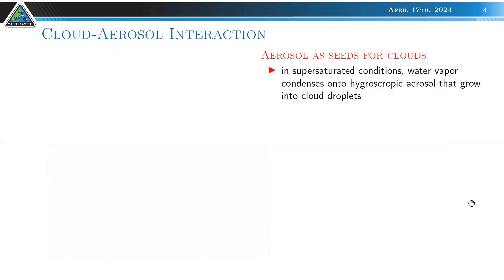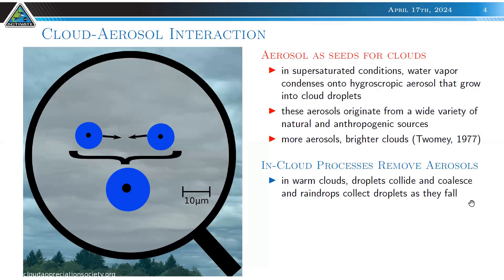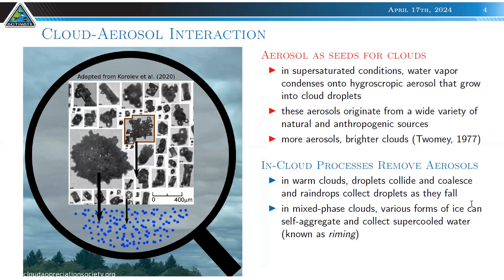Briefly about cloud-aerosol interaction: aerosols in supersaturated conditions act as nuclei for cloud droplets. These aerosols originate from a wide variety of sources. More aerosol, all else being equal, means brighter clouds — the Twomey effect. Regarding removal processes: in warm clouds, the collision-coalescence process forms rain, and each collision event removes an aerosol by number. In mixed-phase clouds, there are more types of hydrometeors.